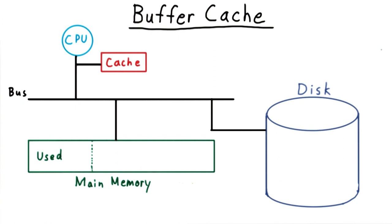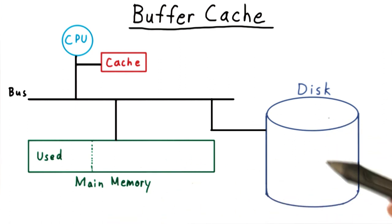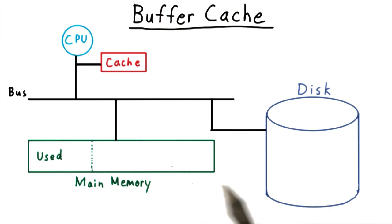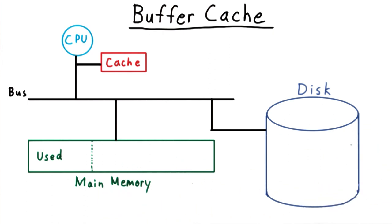If your first reaction is, let's use a cache, then you're on the right track. Indeed, most operating systems do use free portions of main memory as a cache for the much slower mass storage device. Statistics vary over time as technologies change, but by most measurements, memory is as much as 100,000 times faster than disk for random access.